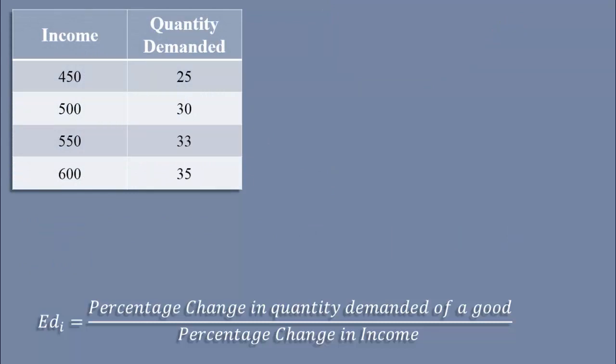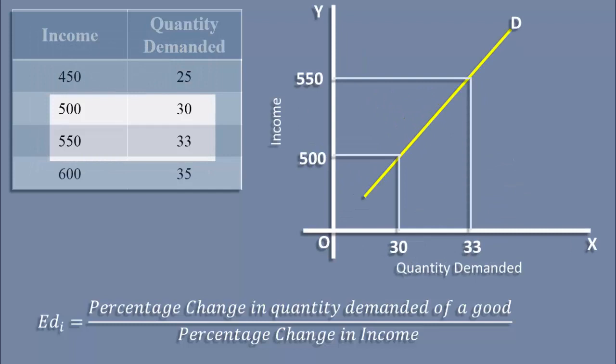Observe this income demand schedule. Again, there is a positive relation between income and quantity demanded. Let us calculate income elasticity of demand in the income range 500 to 550 rupees. Here, demand moves up from 30 units to 33 units.